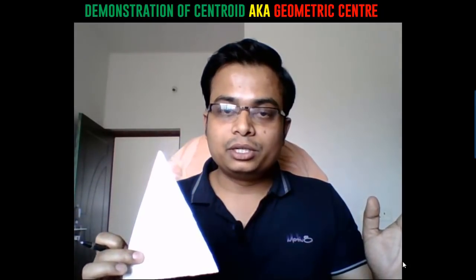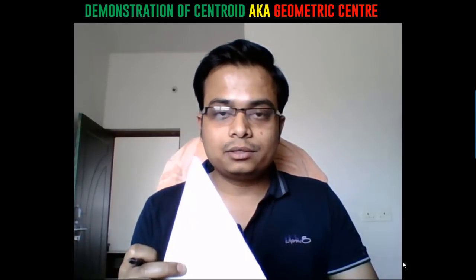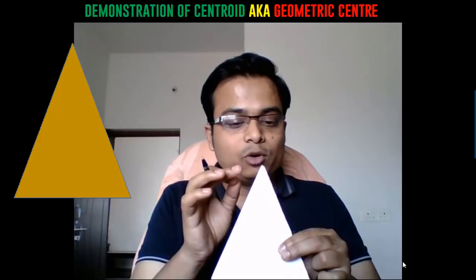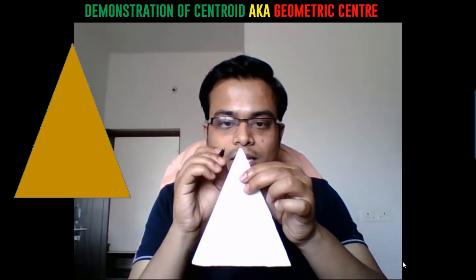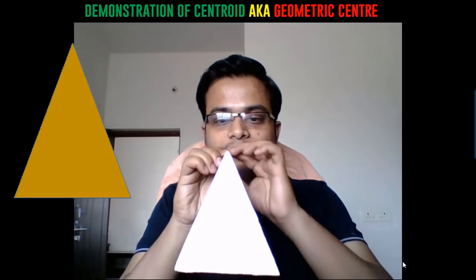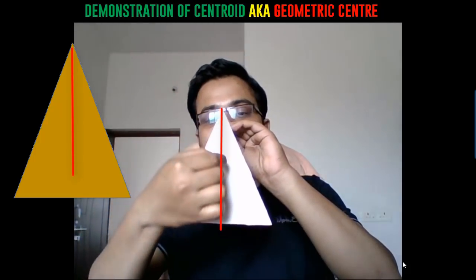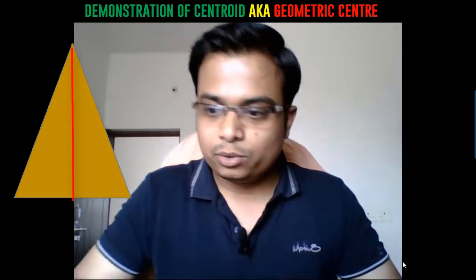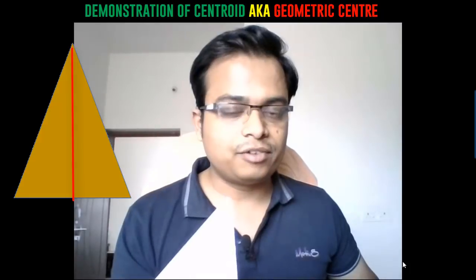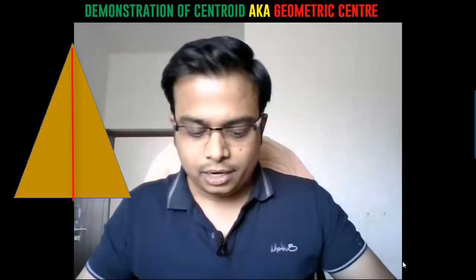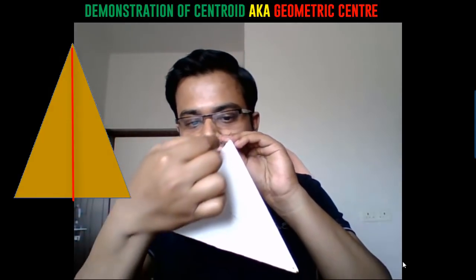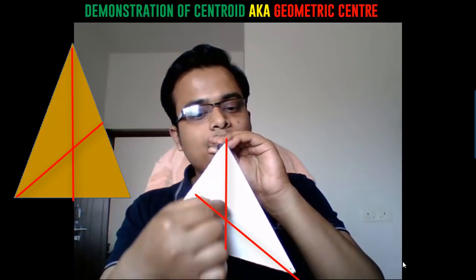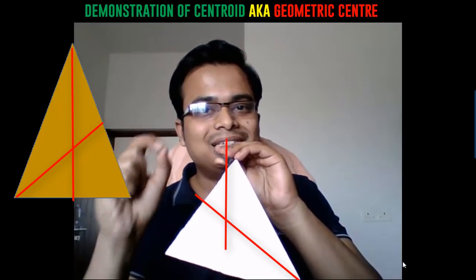The first plane figure I'm going to talk about is an isosceles triangle. What we wish to do is suspend this isosceles triangle at two different points anywhere along its periphery. I punch a hole and suspend it — the line is directed towards the center of the Earth, and we mark that line. Then I repeat the same with another point, make a line directed towards the Earth, and the point of intersection of the two lines is the geometrical center, also known as centroid.